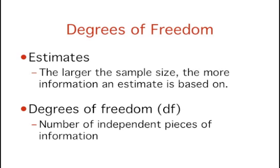Some estimates are based on more information than others. The degrees of freedom of an estimate is the number of independent pieces of information on which the estimate is based. For example, an estimate of the variance based on a sample size of 100 is based on more information than an estimate of the variance based on a sample size of 10.